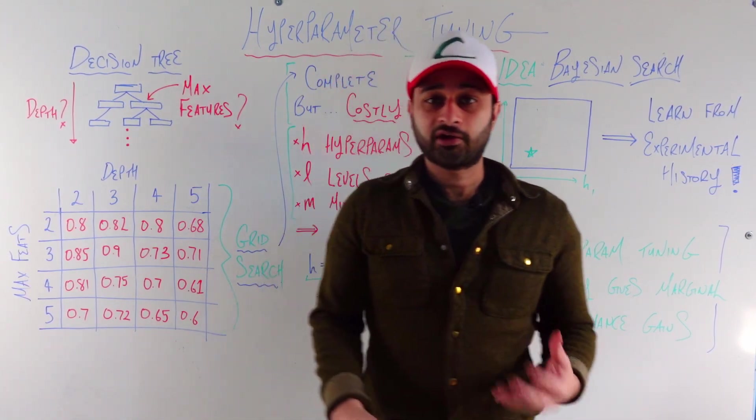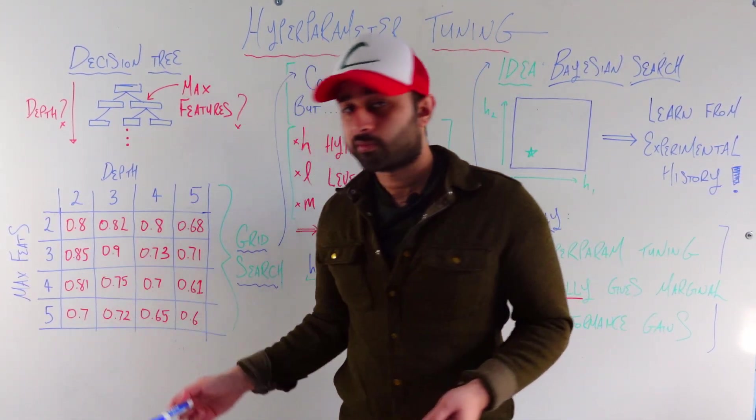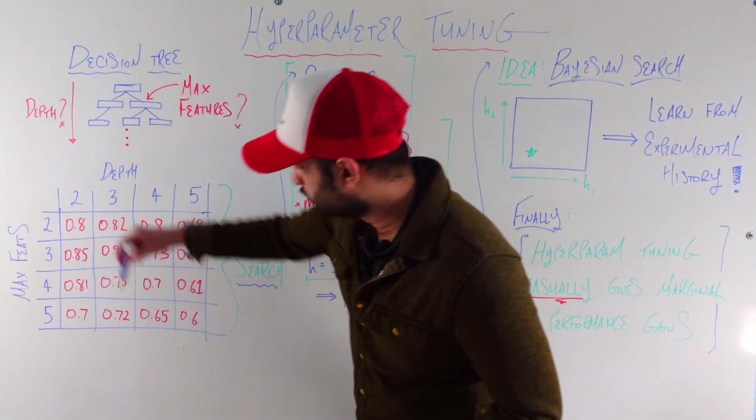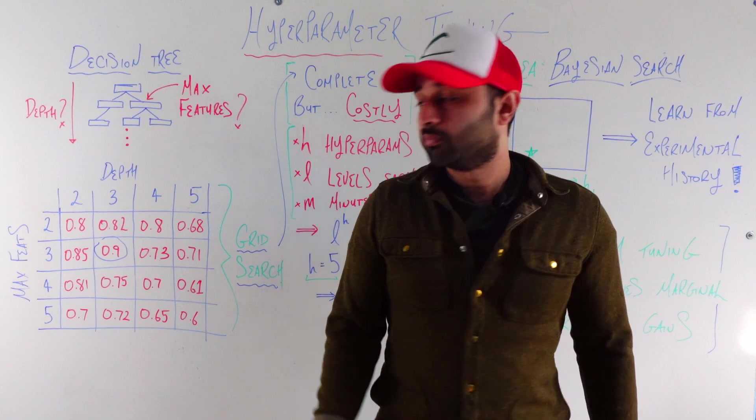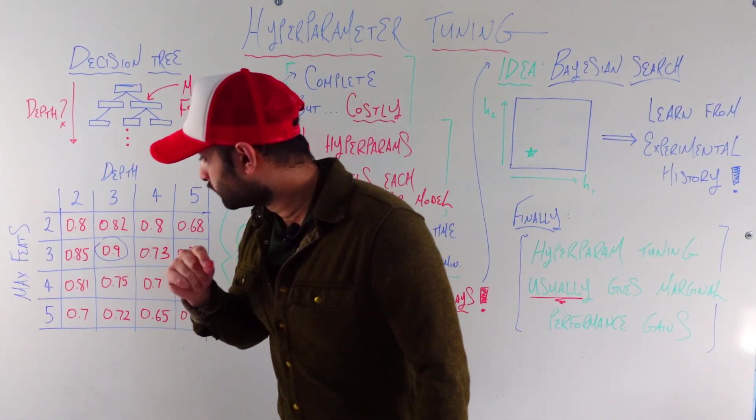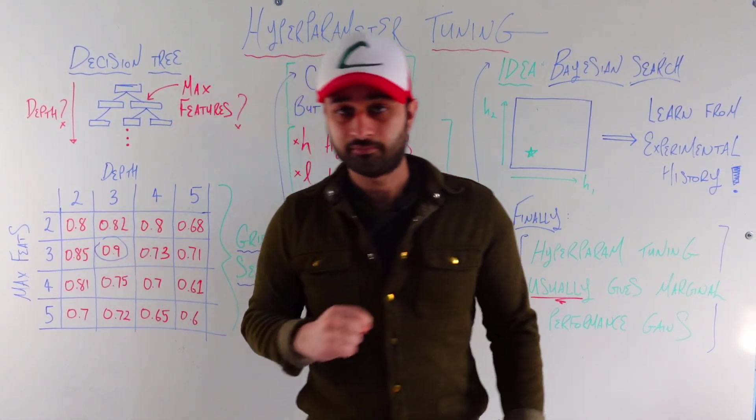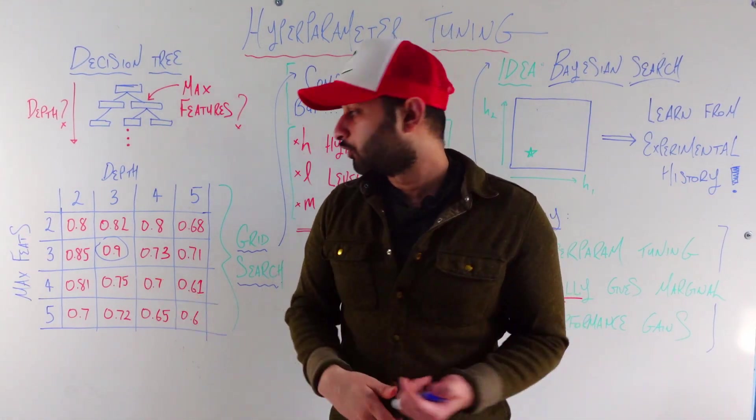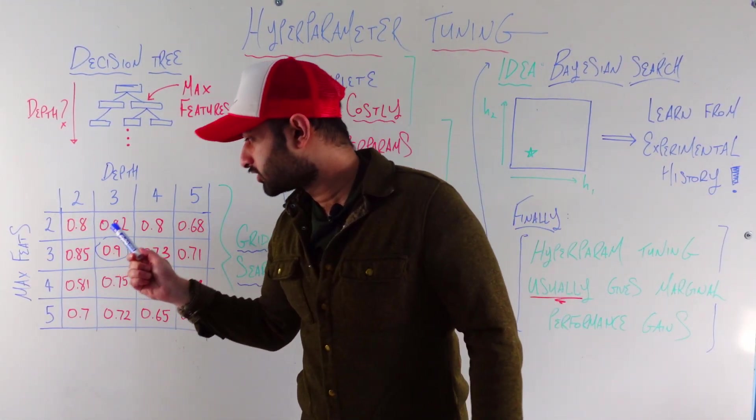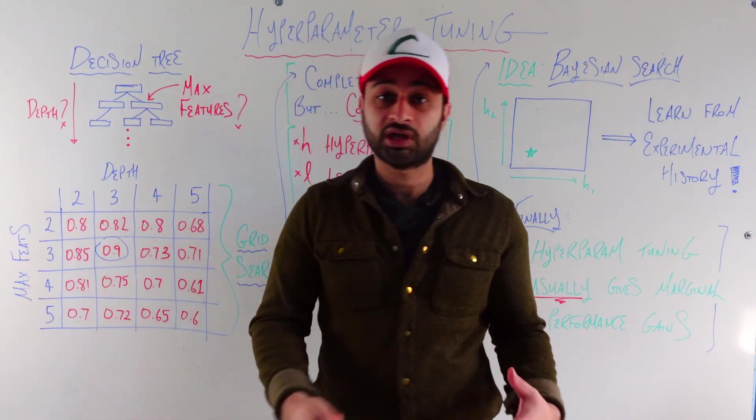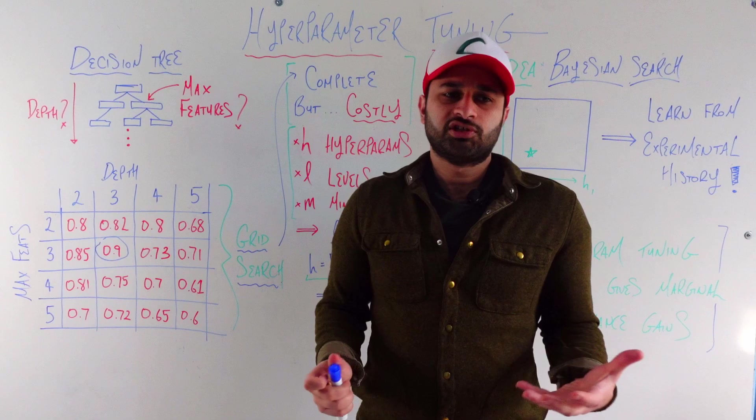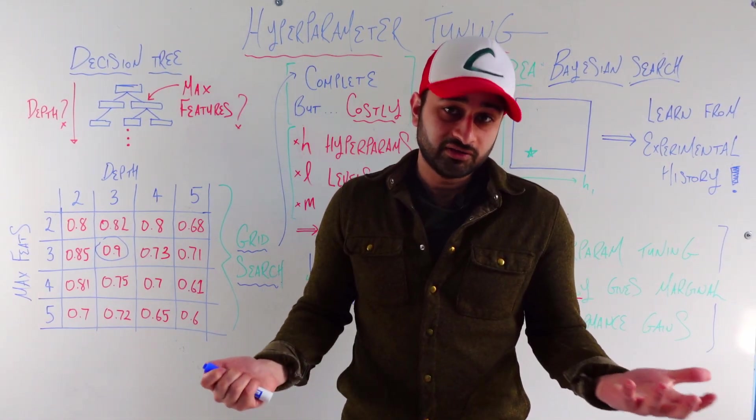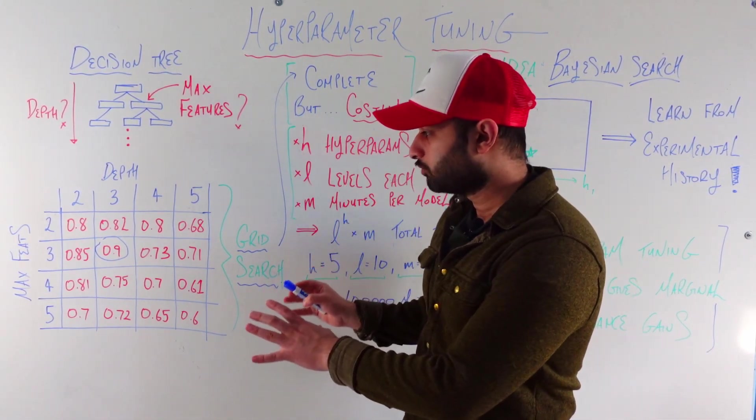So these red numbers here are the accuracies for each combination of hyperparameters. And you see that the winner is going to be this guy right here. And you see we have a maximum accuracy of 90% when both maximum depth and maximum number of features is 3 and 3. So that seems fine. We only had to train 16 models in the process. So you see there's 4 numbers here and 4 numbers here. So 4 times 4 gives you 16 decision trees you have to train. And since decision trees generally train fairly fast, this doesn't seem like a big problem.